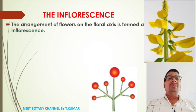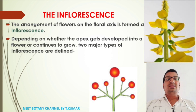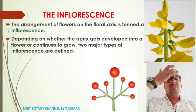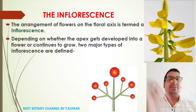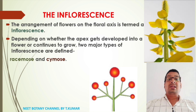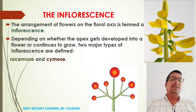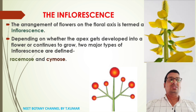The arrangement of flowers on the floral axis is termed as inflorescence. Depending on whether the apex gets developed into a flower or continues to grow, two major types of inflorescence are defined: the racemose type and the cymose type.